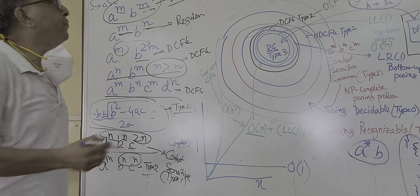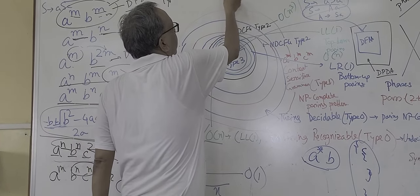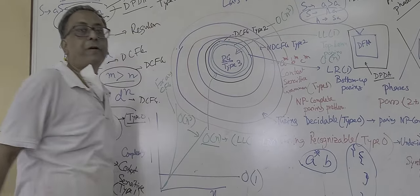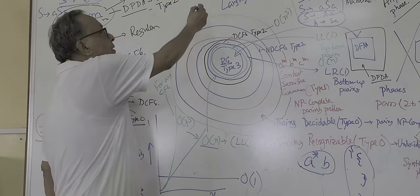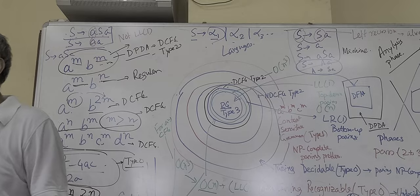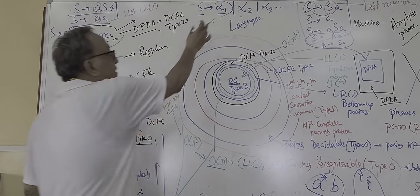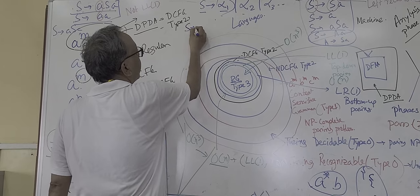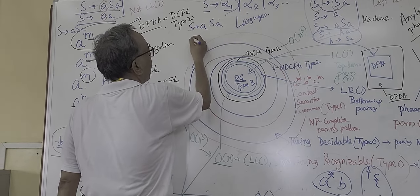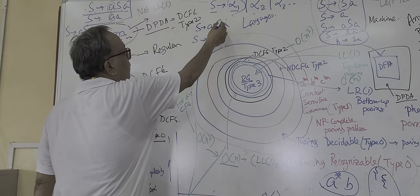And another is if you have a rule S to alpha 1, S to alpha 2, alpha 3, then you have to calculate first of alpha 1, first of alpha 3, which are the terminals it can begin with. Last class we have done. First is if it is A, A S A and it is B.